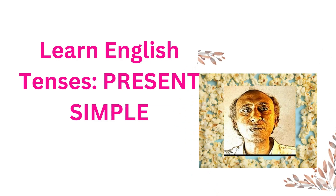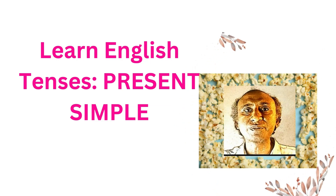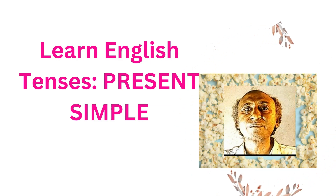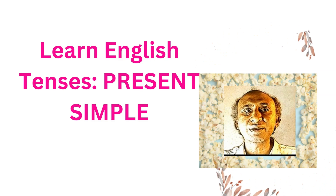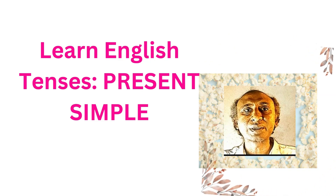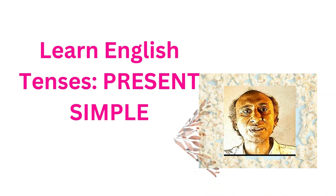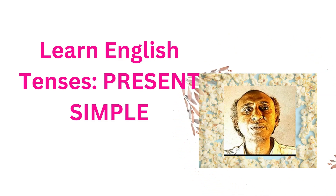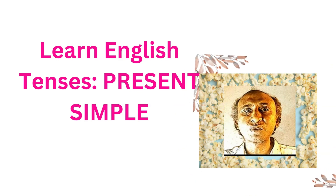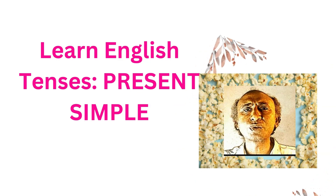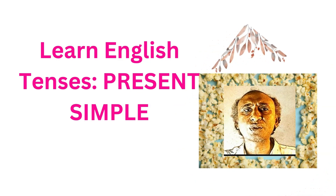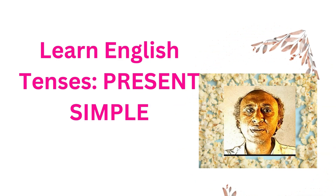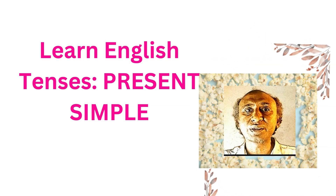Examples of general truth include scientific facts like water boils at 100 degrees Celsius and the Earth orbits around the sun. These statements are true regardless of when or where they are stated.